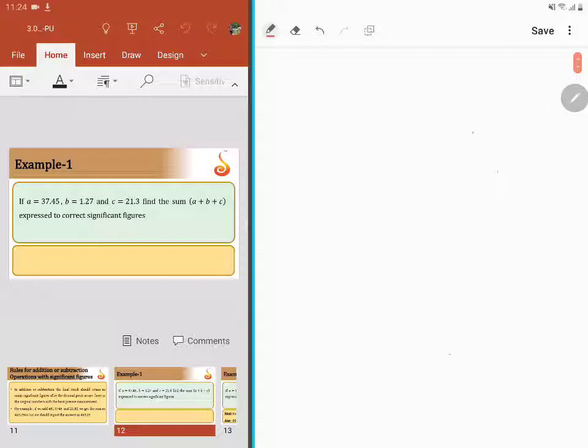That is 37.45 + 1.27 + 21.3. The addition of all these things would give me an answer of 60.02. That is the answer that I would be getting.